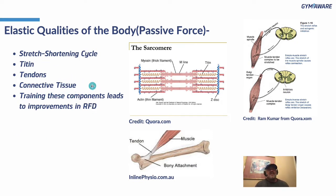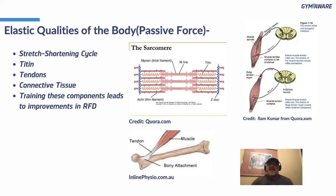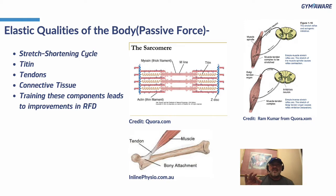All connective tissue responds to training — it can adapt. The stronger and thicker any connective tissue gets, the more force is produced and the less is lost. Training these components leads to improvements in RFD. When you train explosively — bounding, jumping — that causes great adaptations in the tendons and connective tissue. You can improve these things and create maximum force at a very high rate.